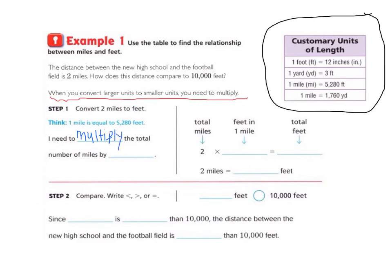The total number of miles by 5,280. So let's move over and it says total miles, 2, which we see up here. 2 miles times feet in 1 mile, we found was 5,280 feet. So when we do the math, we get 2 times 5,280 equals 10,560. 2 miles equals 10,560 feet.